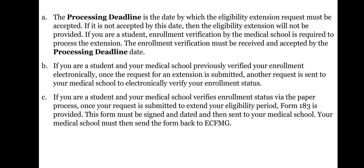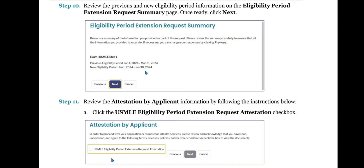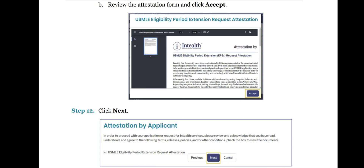If you are a student and your medical school verifies enrollment status via the paper process, once your request is submitted to extend your eligibility period, Form 183 is provided. This form must be signed and dated and then sent to your medical school, which must then send the form back to ECFMG. Step 9: Click Next. Step 10: Review the previous and new eligibility period information on the Eligibility Period Extension Request Summary page. Once ready, click Next. Step 11: Review the attestation by clicking the USMLE Eligibility Period Extension Request Attestation checkbox. Review the attestation form and click Accept. Step 12: Click Next.